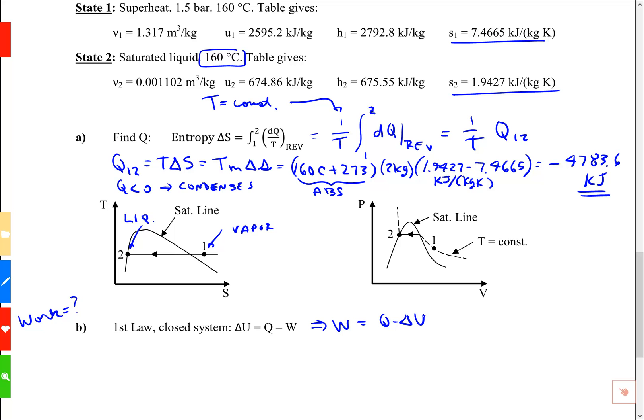W is going to be Q minus ΔU. And then the table doesn't give capital U. It gives little u. So I'm going to rewrite this as Q minus mass times Δu. Again, this is what's in the table. Okay, and now we have capital Q and we have the u values so we can turn the crank on this.